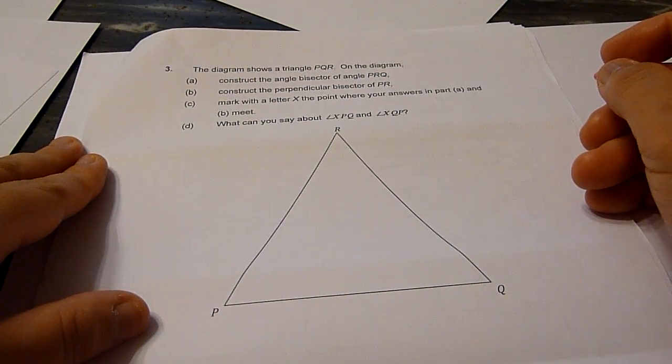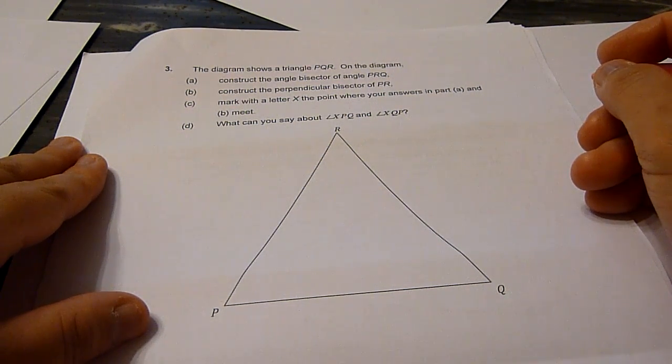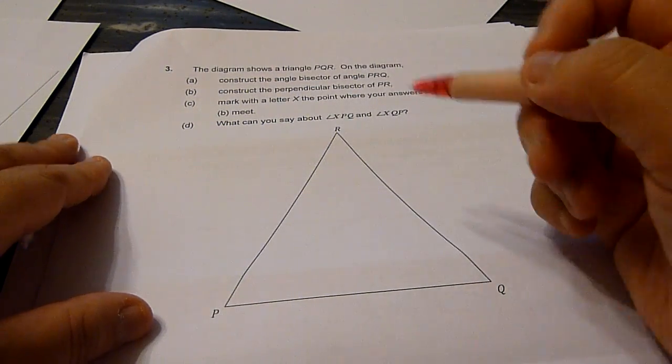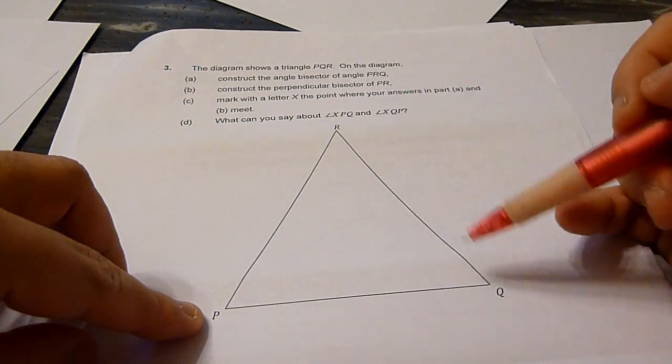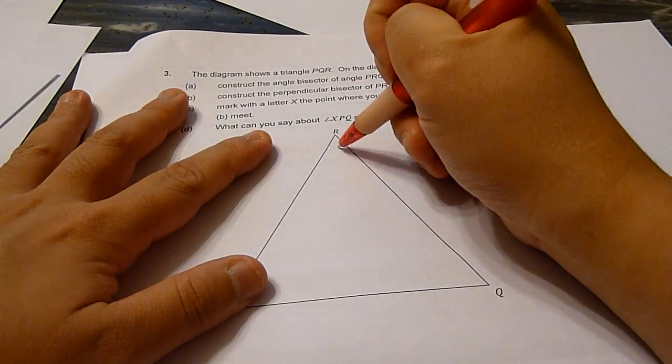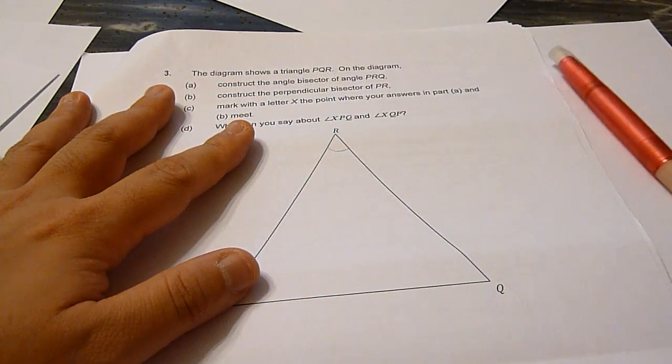In this question there are four parts. The first part says construct the angle bisector of angle PRQ. So angle PRQ is here and this is the angle which we need to construct the bisector.